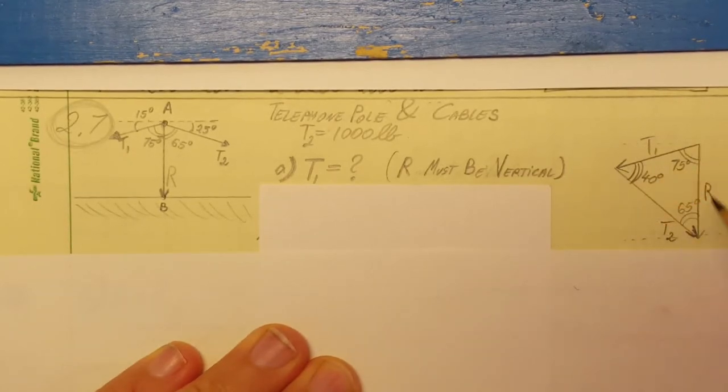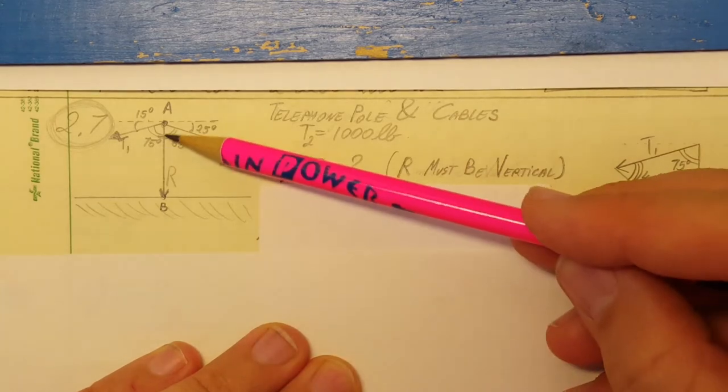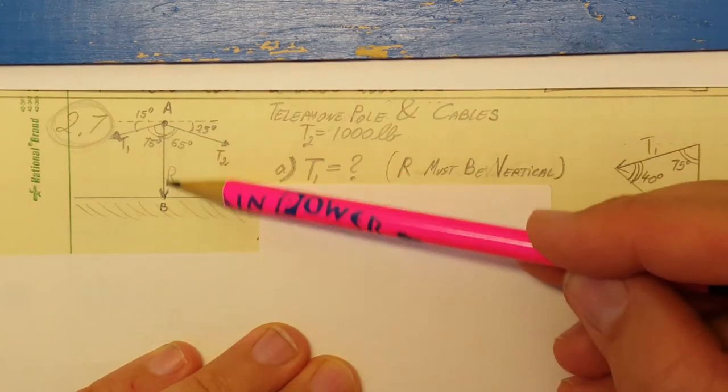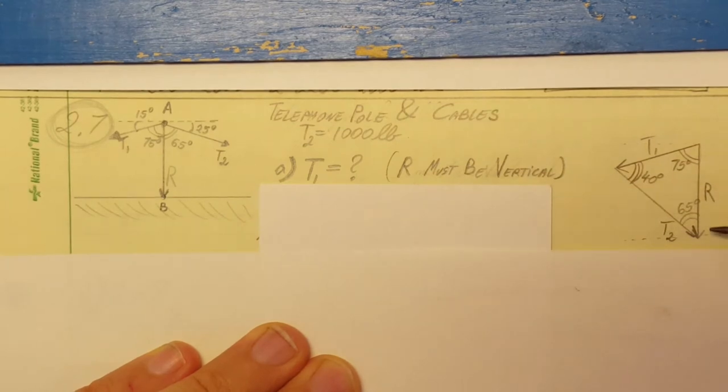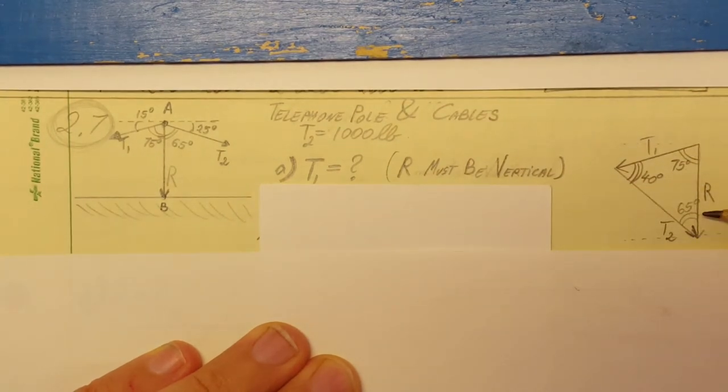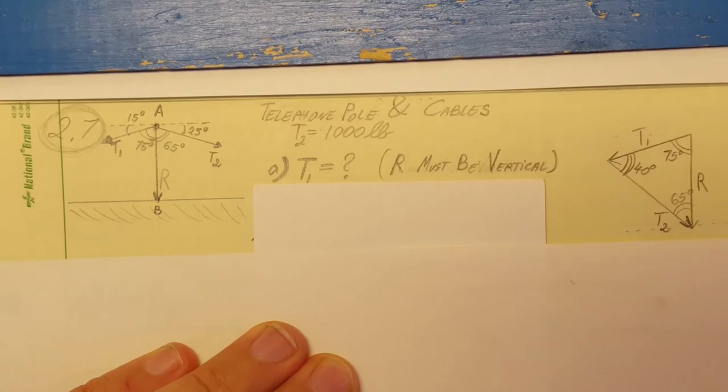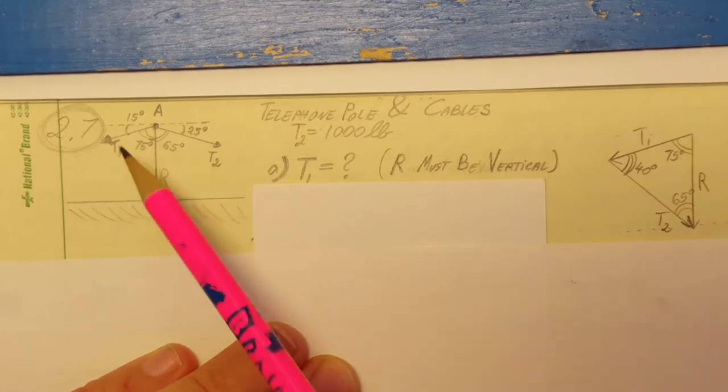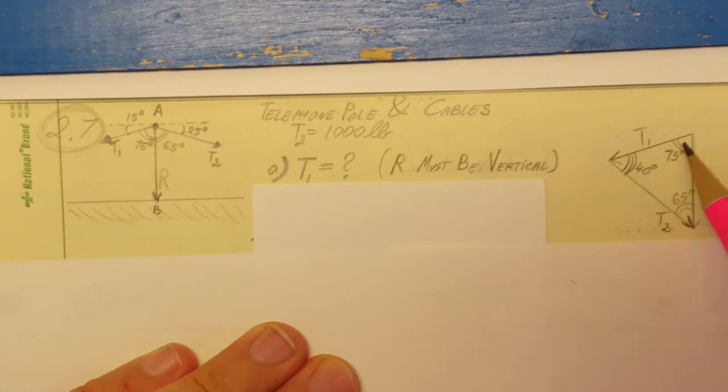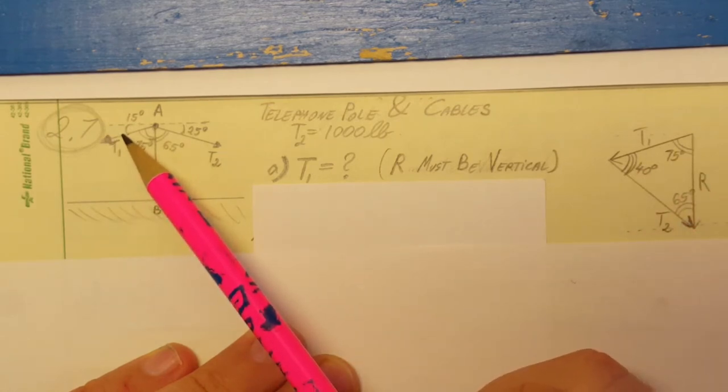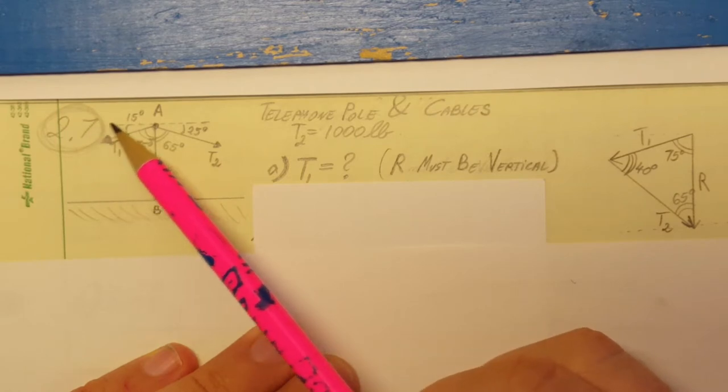First, we're going to draw our force triangle. I'm going to draw the resultant first—since it's vertical, I'll make a vertical vector right here. Next I'm going to transfer T1 here, and we can see that it has a 15 degree angle with the horizontal.